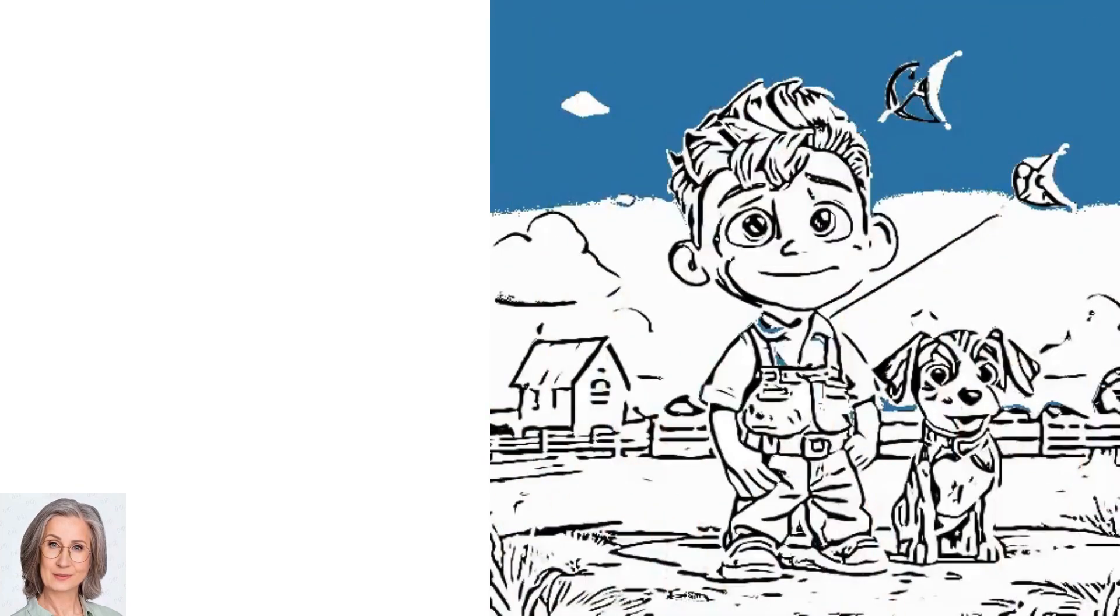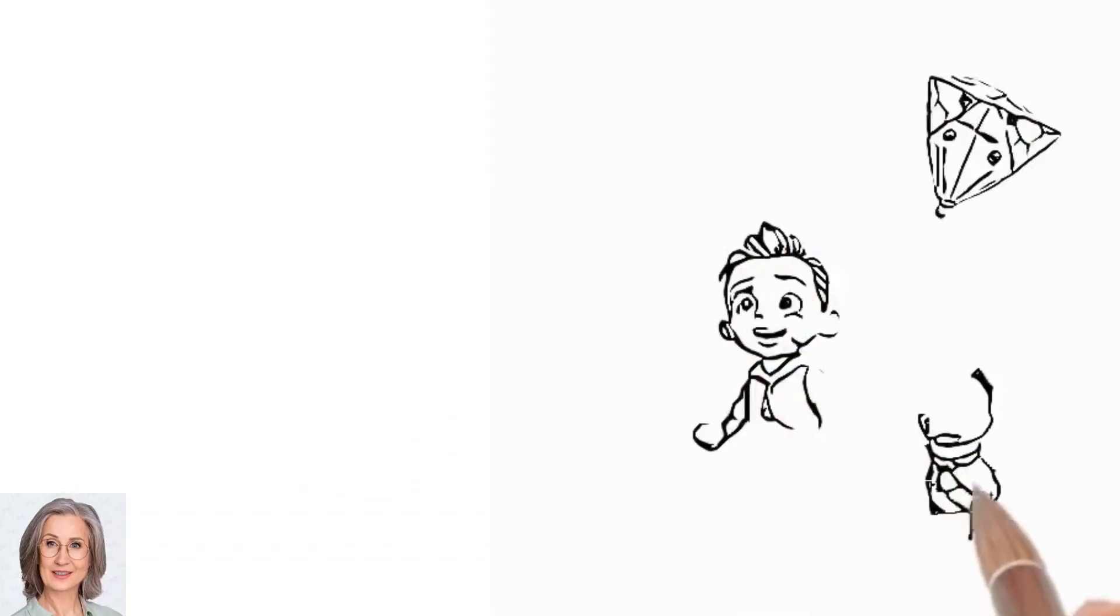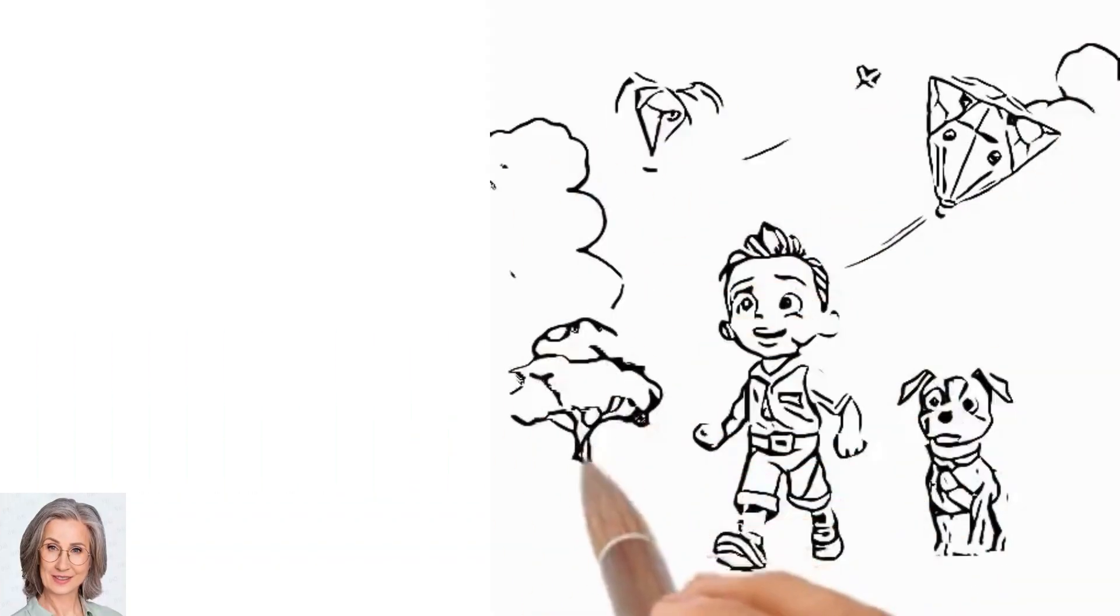Sparky wasn't giving up. He barked at the kite, trying to encourage it to fly. And then, by magic, the wind picked up and the kite began to soar.